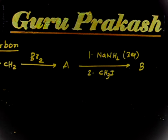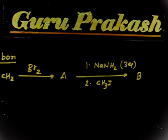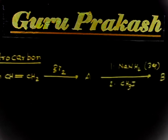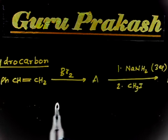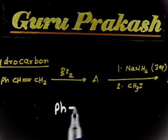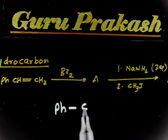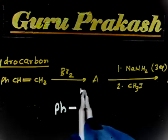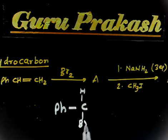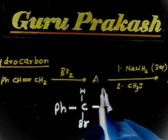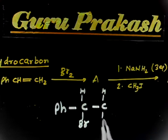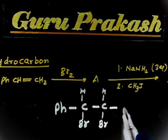In this case, the first step is addition of bromine. You have to add 2 moles of bromine. So you will have Ph-CH with one bromine added on this carbon and another bromine added on this carbon. So this is the first step — vicinal dibromide formation.